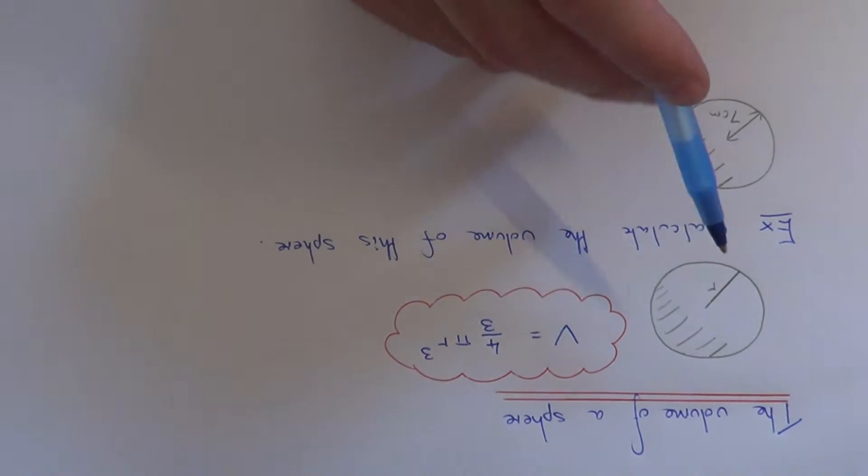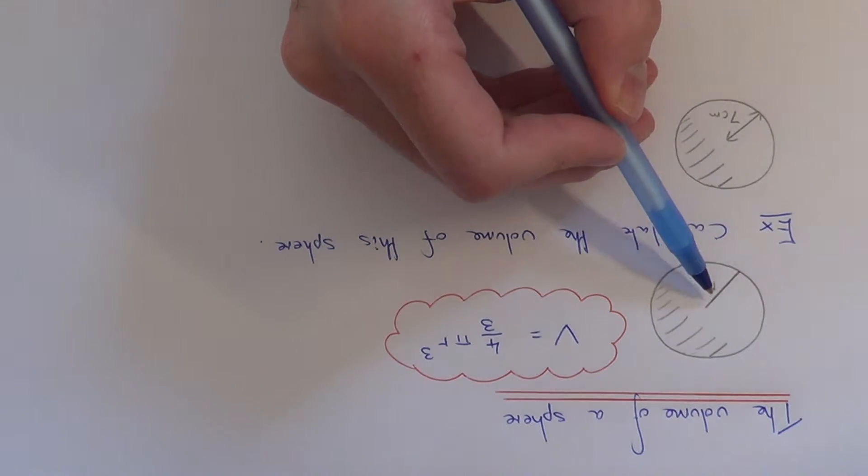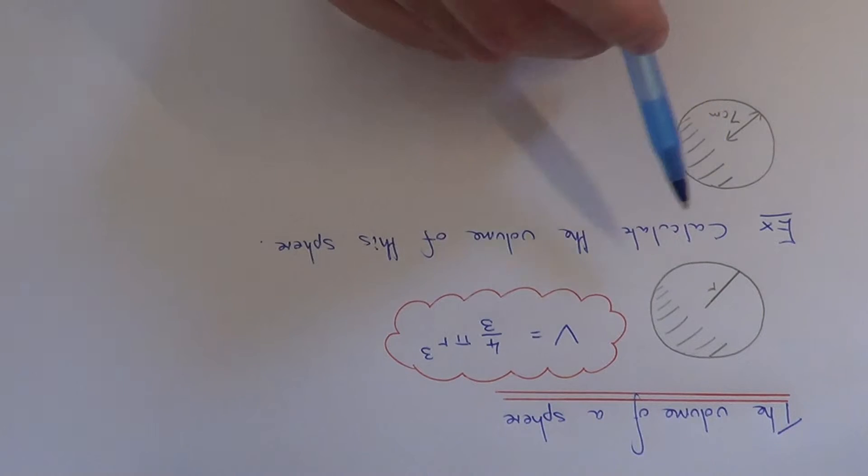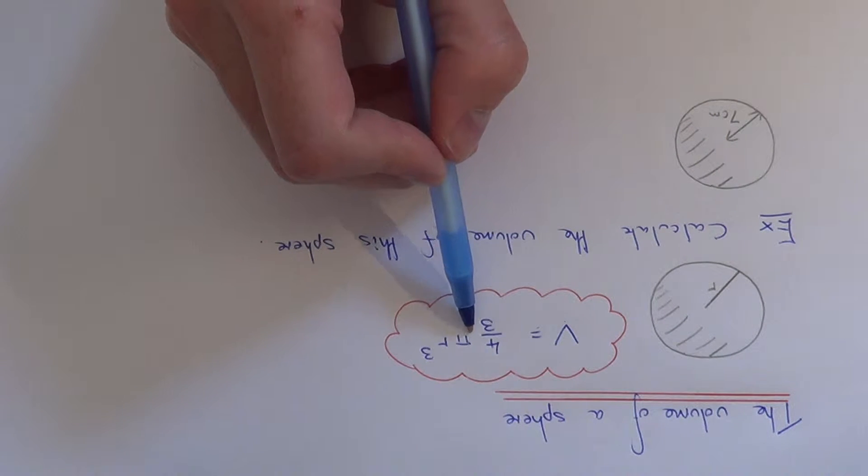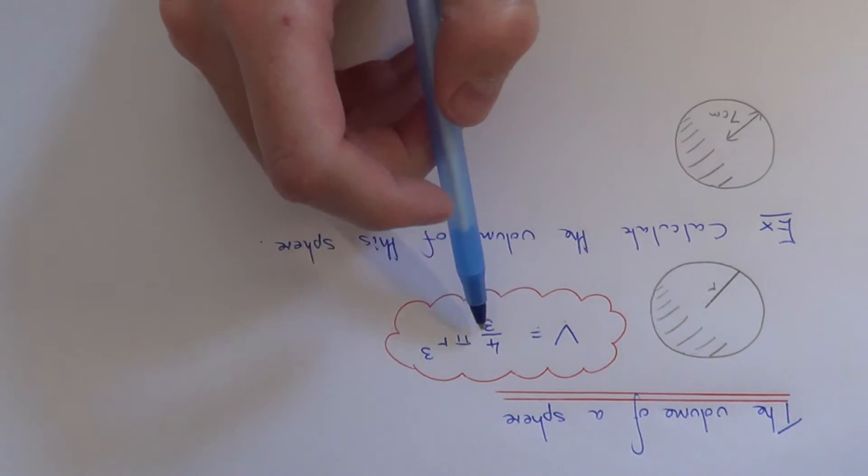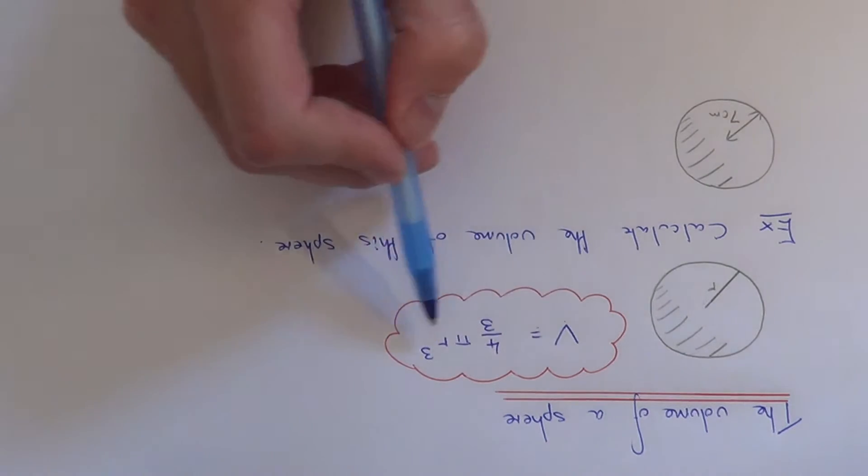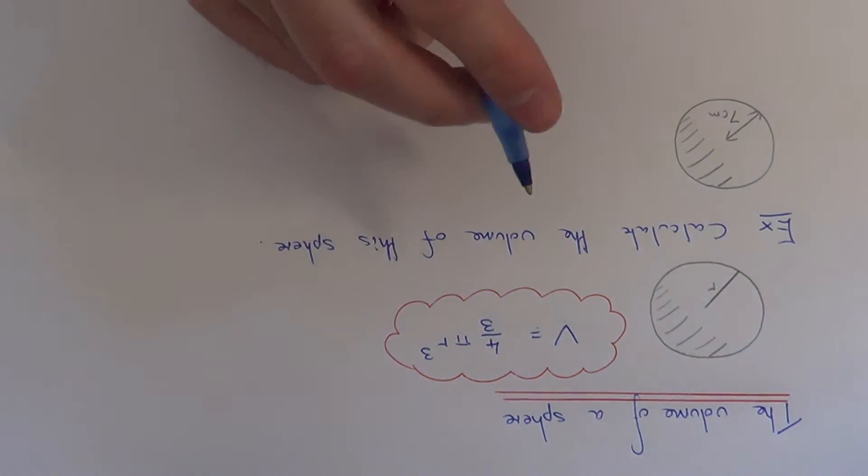In order to work out the volume, all we need to know is the radius of the sphere. We can use the formula V equals 4 thirds times pi times r cubed, where V is the volume and r is the radius of the sphere.